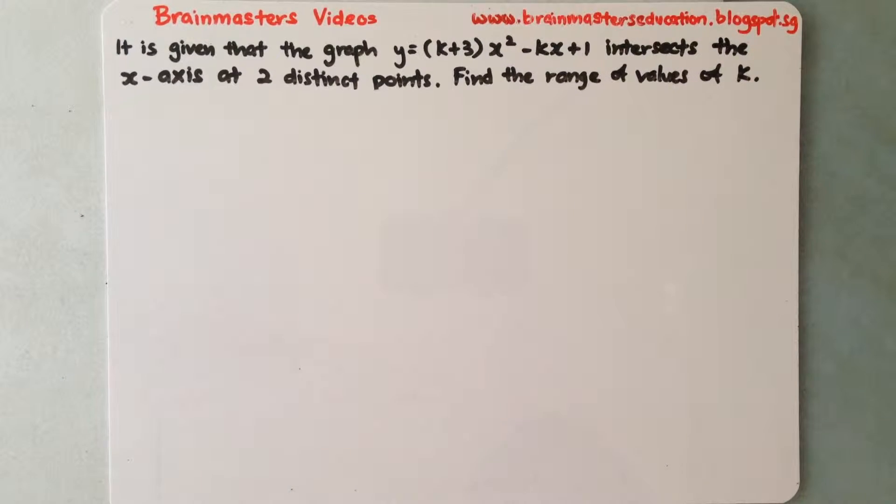It is given that the graph y equals k plus 3 x square minus kx plus 1 intersects the x axis at two distinct points. So find the range of values of k.